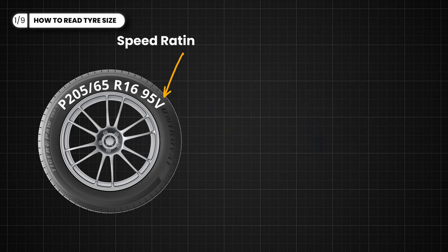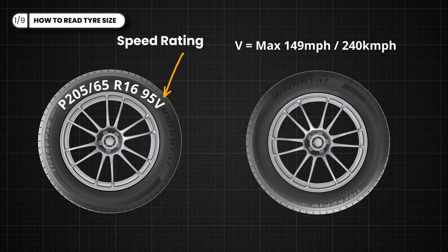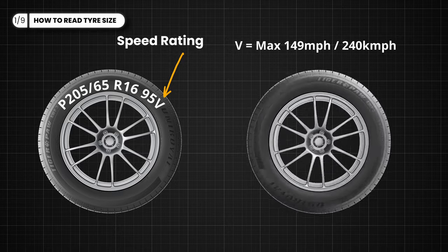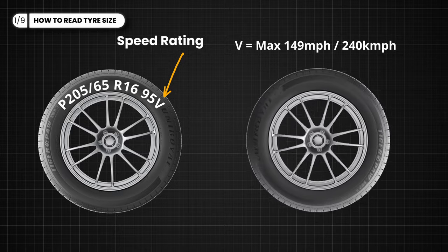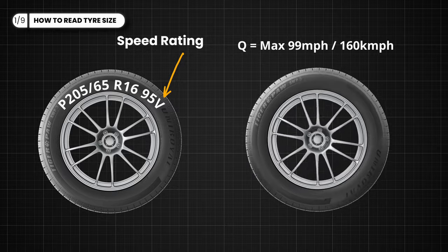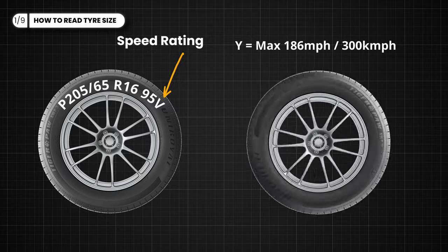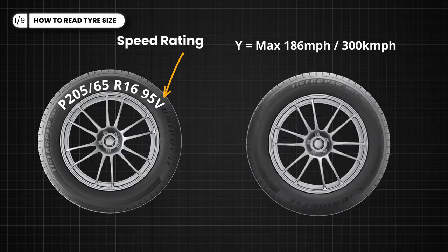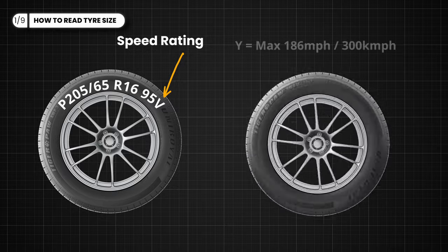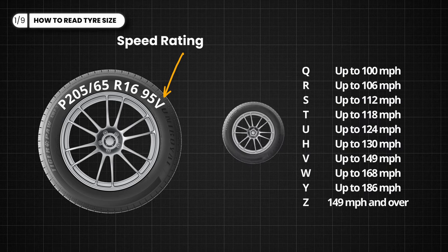The final letter V corresponds to the tire speed rating. In the example, the speed rating V indicates a maximum speed of 149 miles per hour. Letter Q indicates 99 miles per hour, and letter Y indicates 186 miles per hour, with each letter corresponding to a specific speed threshold.